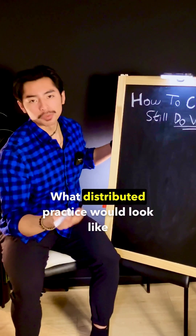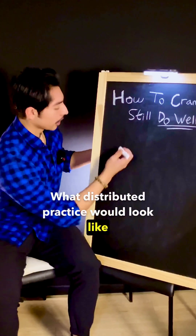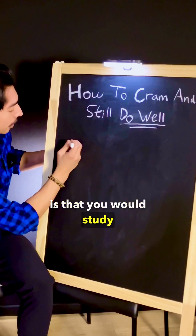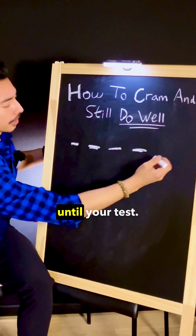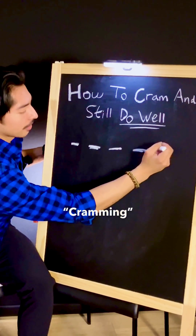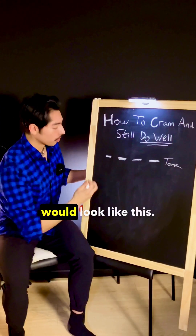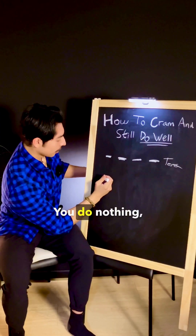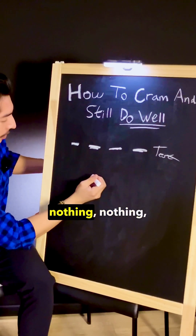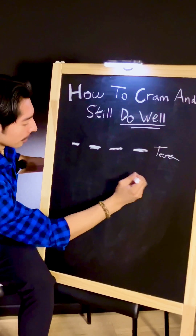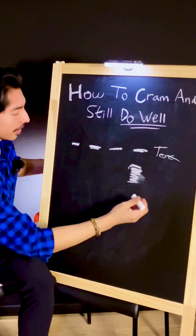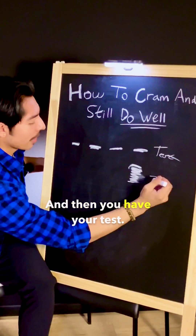What distributed practice would look like is that you would study a little bit at a time until your test. Cramming would look like this: you do nothing, nothing, nothing, nothing — boom — a ton of studying, and then you have your test.